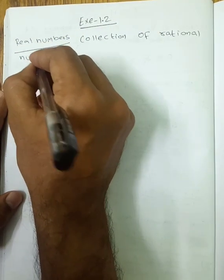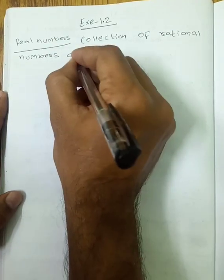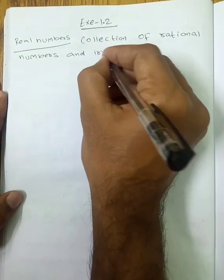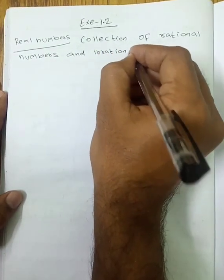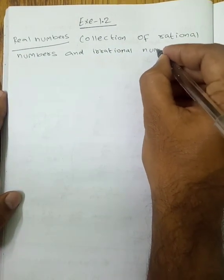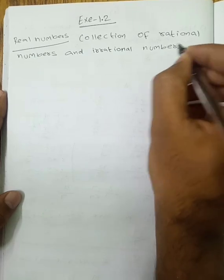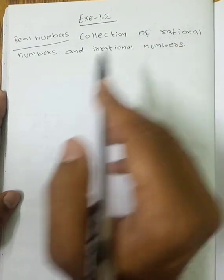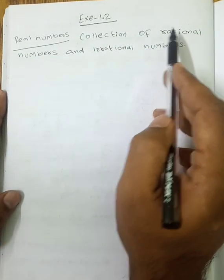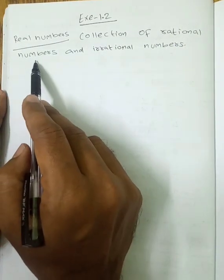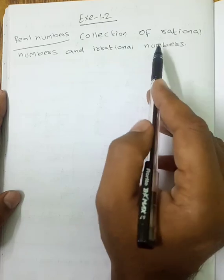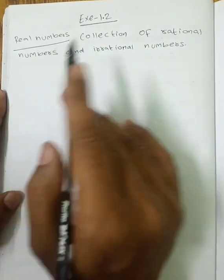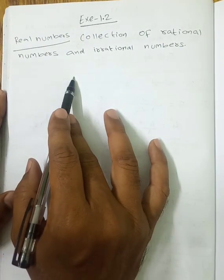The collection of rational numbers and irrational numbers means all numbers are real numbers. Rational numbers are in the form of p/q. If a number is not in the form of p/q, that is an irrational number. So the collection of rational and irrational numbers — these are all real numbers.